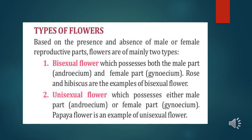Types of flowers — there are two types: bisexual and unisexual. Bisexual means the flower has both male and female parts. Rose and hibiscus are examples of bisexual flowers. Unisexual means the flower has only either the male part or the female part. Papaya flower is an example of a unisexual flower.